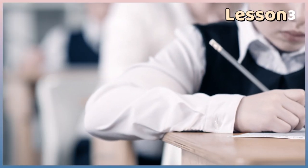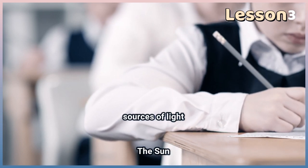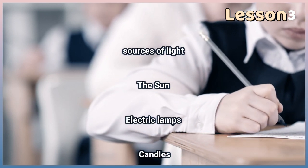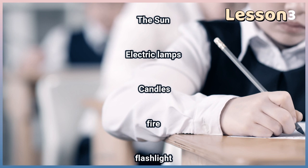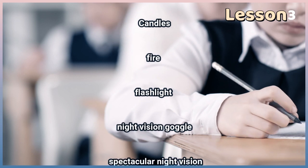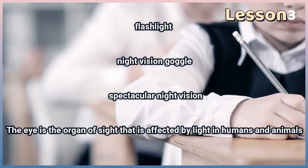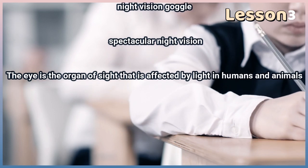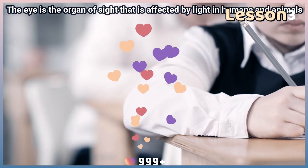Repeat after me: sources of light, the sun, electric lamps, candles, fire, flashlight, night vision goggle, spectacular night vision. The eye is the organ of sight that is affected by light in humans and animals.